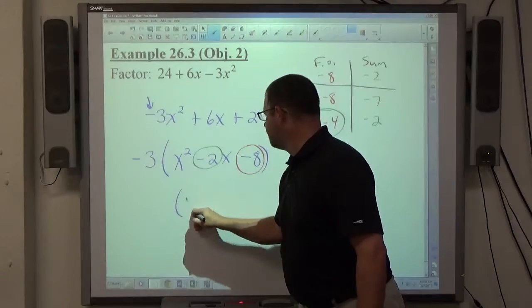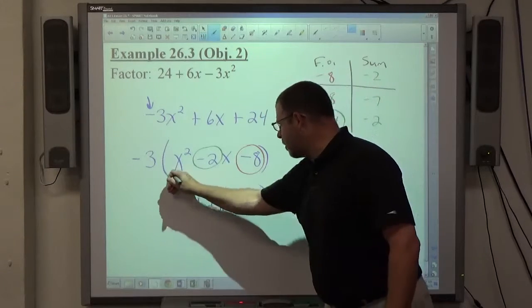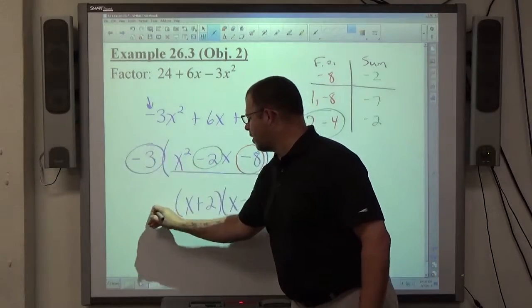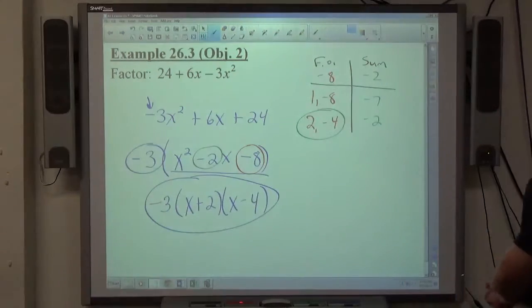And we get (x + 2)(x - 4) as the factor form of this part. -3 is still part of the answer because we've already taken that out. So if you have a common factor to take out, make sure that extracts with.